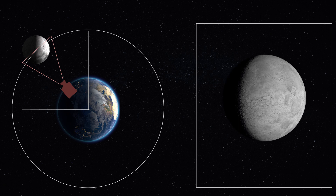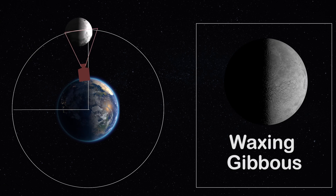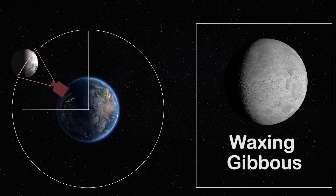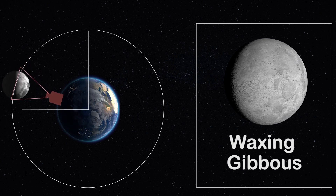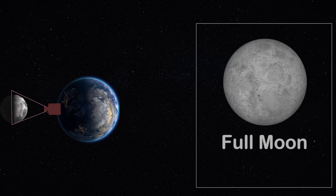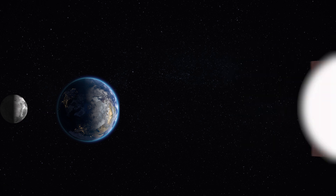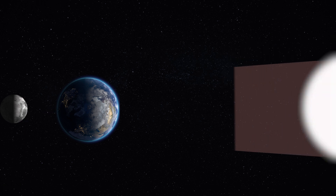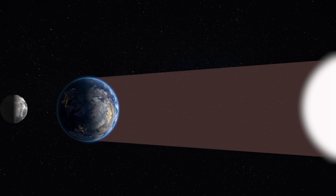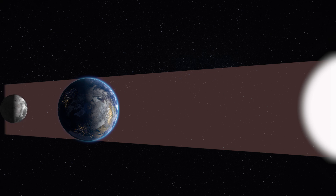When viewed from Earth at this position, the Moon looks like a convex shape and that is why it is called gibbous. That shape goes on progressively increasing, so we call it waxing gibbous. When the Moon reaches this particular point we will be able to see a fully circular Moon and we call it full moon.